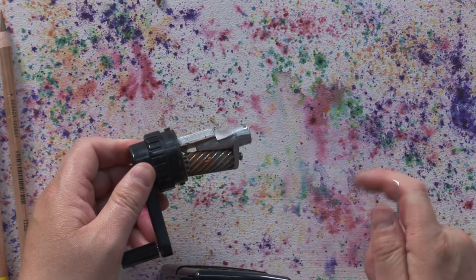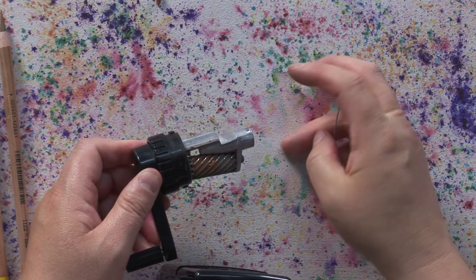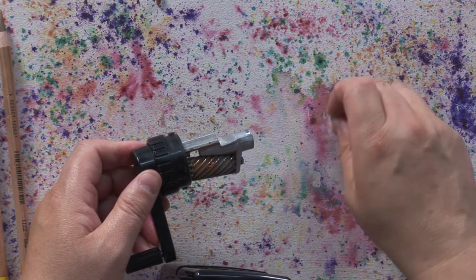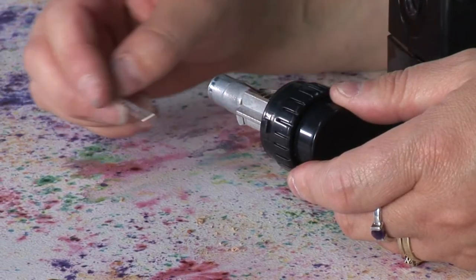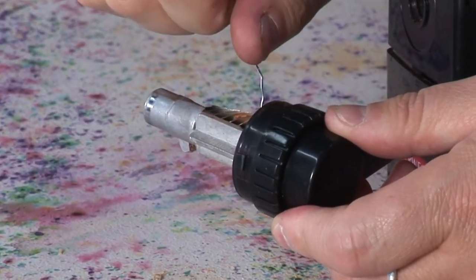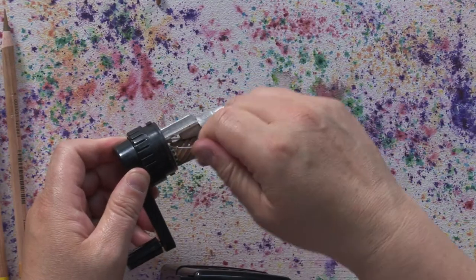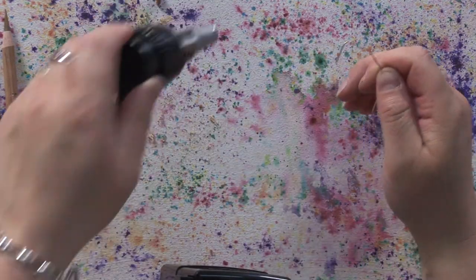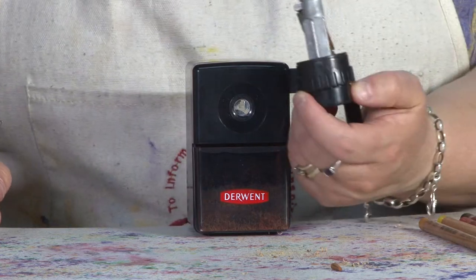A really useful little tool is a paper clip which I've bent with a little kink on the end. You just simply push the end in to clear any blockages, tap it out, and the lead will come out.